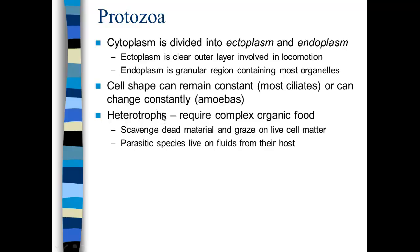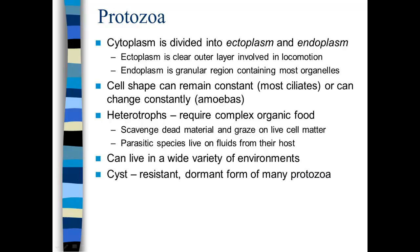An example of a parasitic protozoan is the protozoan that causes malaria. They can live in a very wide variety of environments. Protozoa will form cysts — this is like a spore for bacteria; this is the dormant phase, and you need to know this definition and this term. When the protozoan is deprived of nutrients or under harsh conditions, it can form a cyst to allow it to survive long term.